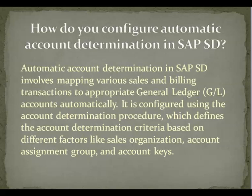How do you configure automatic account determination in SAP S.D.? Answer: Automatic account determination in SAP S.D. involves mapping various sales and billing transactions to appropriate general ledger accounts automatically. It is configured using the account determination procedure, which defines the account determination criteria based on different factors like sales organization, account assignment group, and account key.